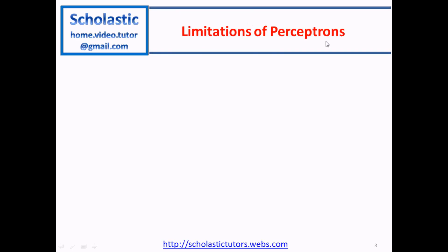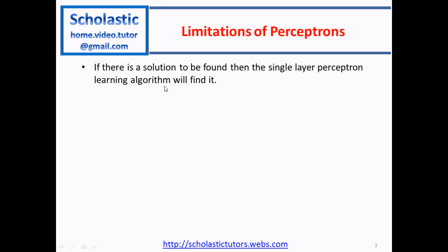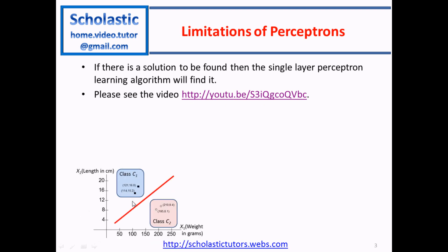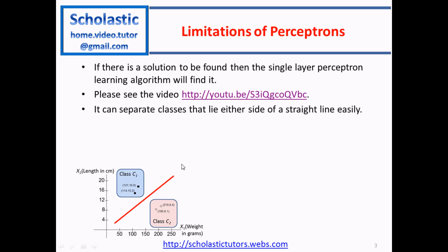Limitations of Perceptrons. If there is a solution to be found, then the single-layer perceptron learning algorithm will find it. As shown in a previous video, where we showed a problem with a linear separator, the two classes C1 and C2 are clearly separable using a linear separator. It can separate classes that lie either side of a straight line easily — that is, using a single-layer perceptron model.